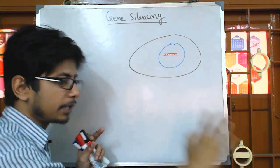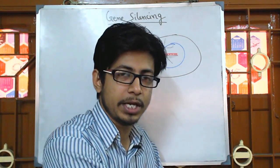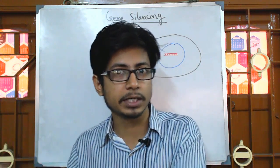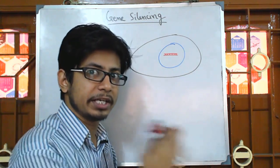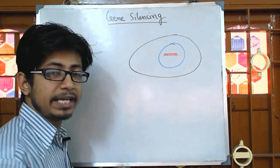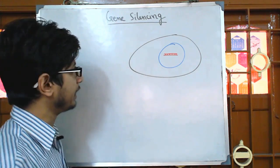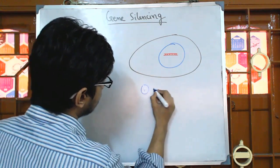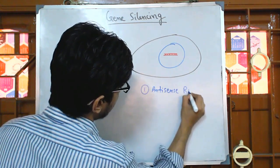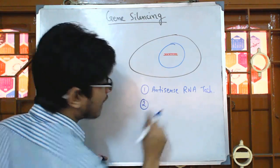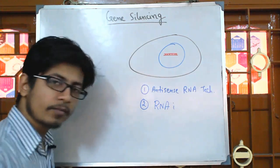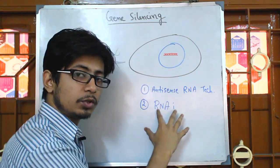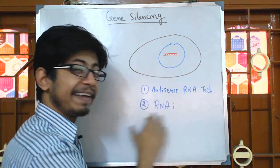The idea of gene silencing using RNA technology involves two main types of techniques available nowadays. One is antisense RNA technology, and the second type is RNA interference, or RNAi. There is a separate video on RNA interference and how RNAi is used to silence genes, so you can watch those videos for understanding the RNAi mechanism.